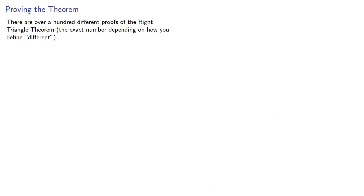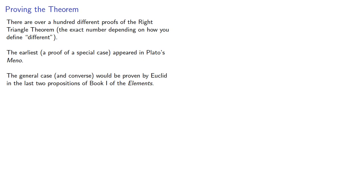There are over a hundred different proofs of the right triangle theorem, the exact number depending on how you define different. The earliest, a proof of a special case, appeared in Plato's Meno. The general case and converse would be proven by Euclid in the last two propositions of Book 1 of the Elements.